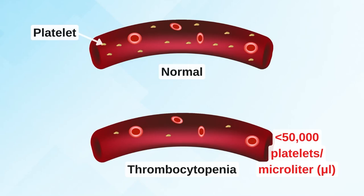Another contraindication seen in lab results is thrombocytopenia — when the platelet count is less than 50,000 per microliter. That is called severe thrombocytopenia and we are not allowed to start anticoagulation.